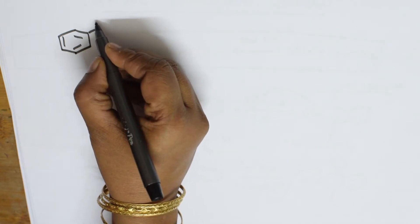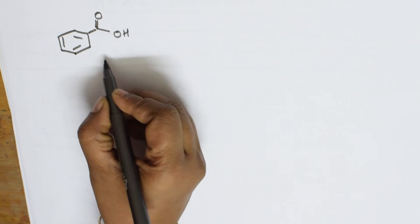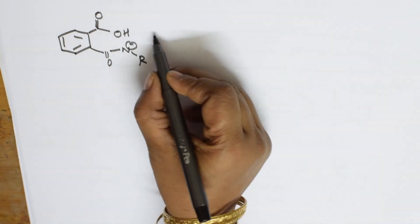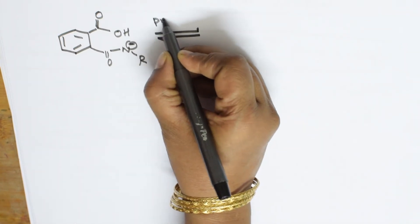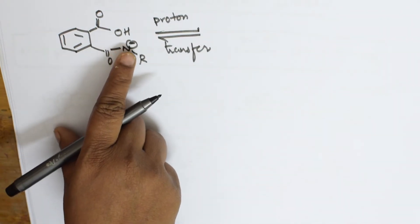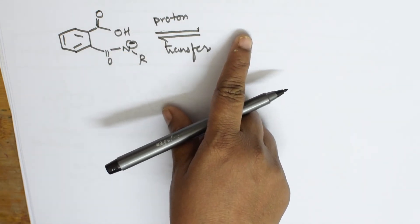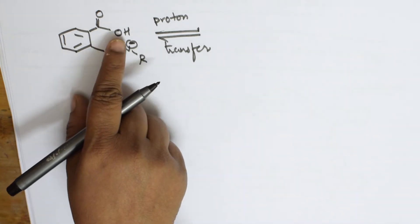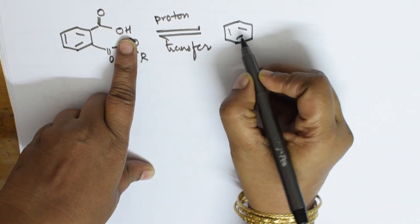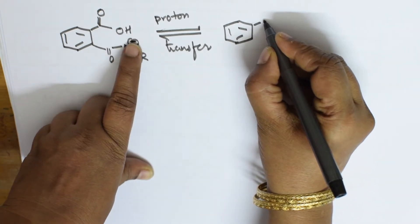After this step there will be a proton transfer. Looking at the compound — benzene ring, C=O, OH, C=O, N-R — there is a proton transfer. The proton shifts to nitrogen. This gives N-H-R on one side. Meanwhile the carbonyl carbon becomes CO2 on the other side.